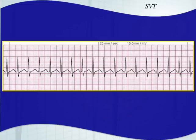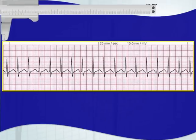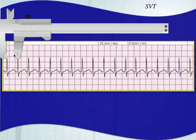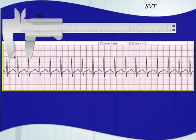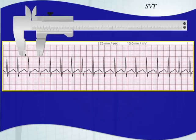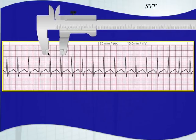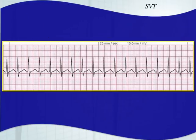Here's a live patient example of SVT — just faster than 150 beats per minute, no real identifiable P wave, narrow QRS complex, very regular rhythm. It's super important to check regularity because your treatment will be different. If this was irregular with no P waves, we'd have to assume atrial fibrillation.